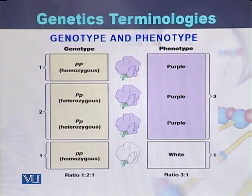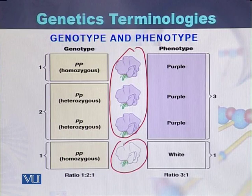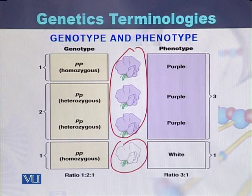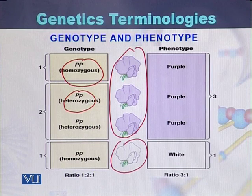Taking an example of genotype and phenotype: if we have three purple color flowers and one white color flower, these are the phenotypes. The purple color flowers have two types of genotype — one is homozygous (PP) and the other is heterozygous (Pp). So purple color has two types of genotypes: homozygous and heterozygous.